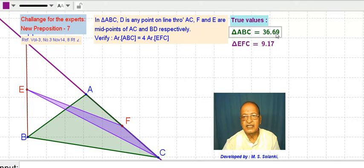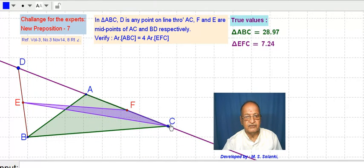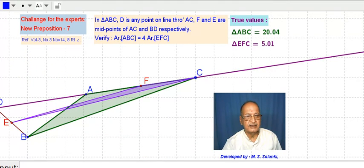36.69 divided by 4 will give approximately 9.17. There may be something after the decimal point; we have rounded up to two places. Here also we can see 4 times area EFC is equal to area ABC.